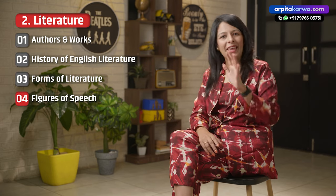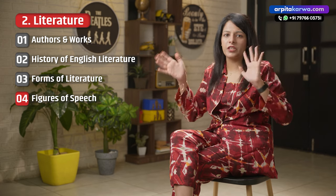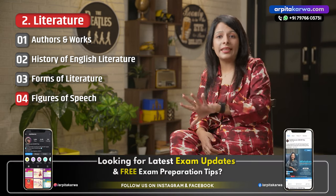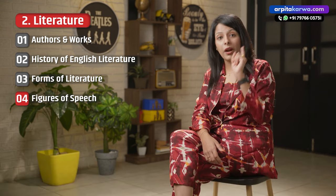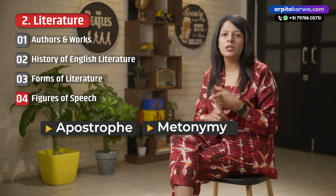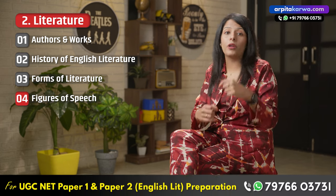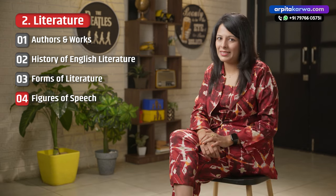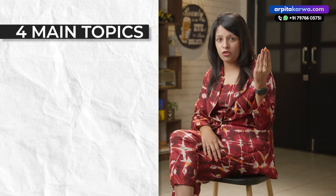Let us now look at the last topic under English literature, which is Figures of Speech. Every literature student knows the simplest figures of speech such as simile, metaphor, and alliteration. However, in the TGT PGT exam you also get questions from more complex ones like apostrophe and metonymy. Some of them might be very new to you, but you need to study them for the exam, as around 15 to 20 questions from this topic will be asked.